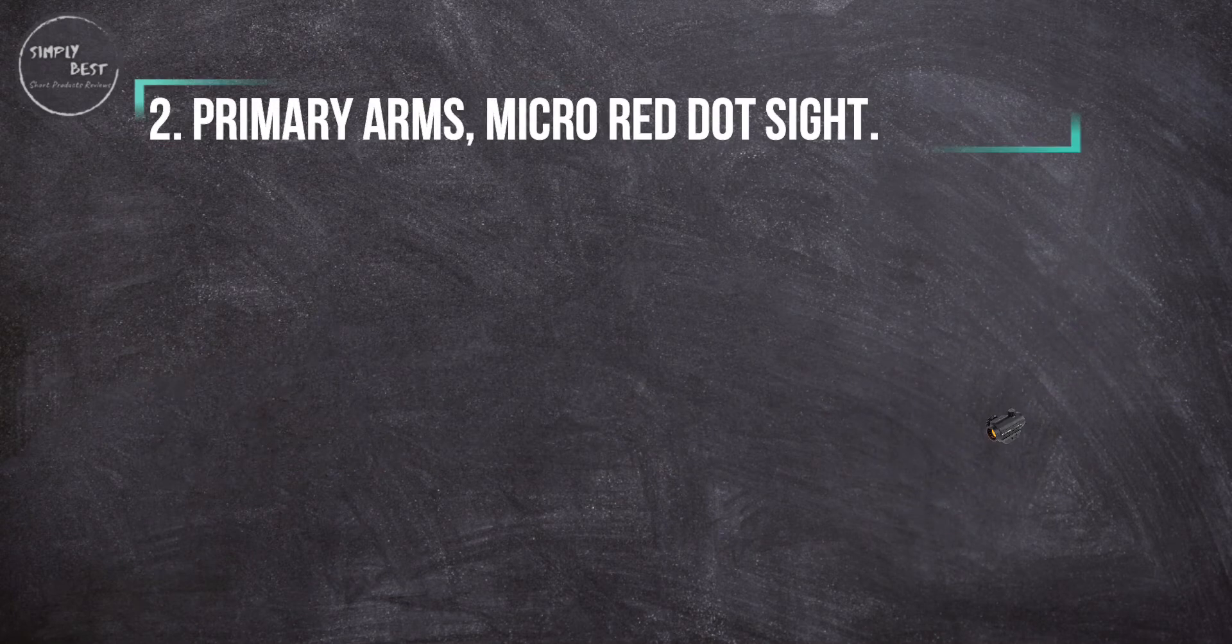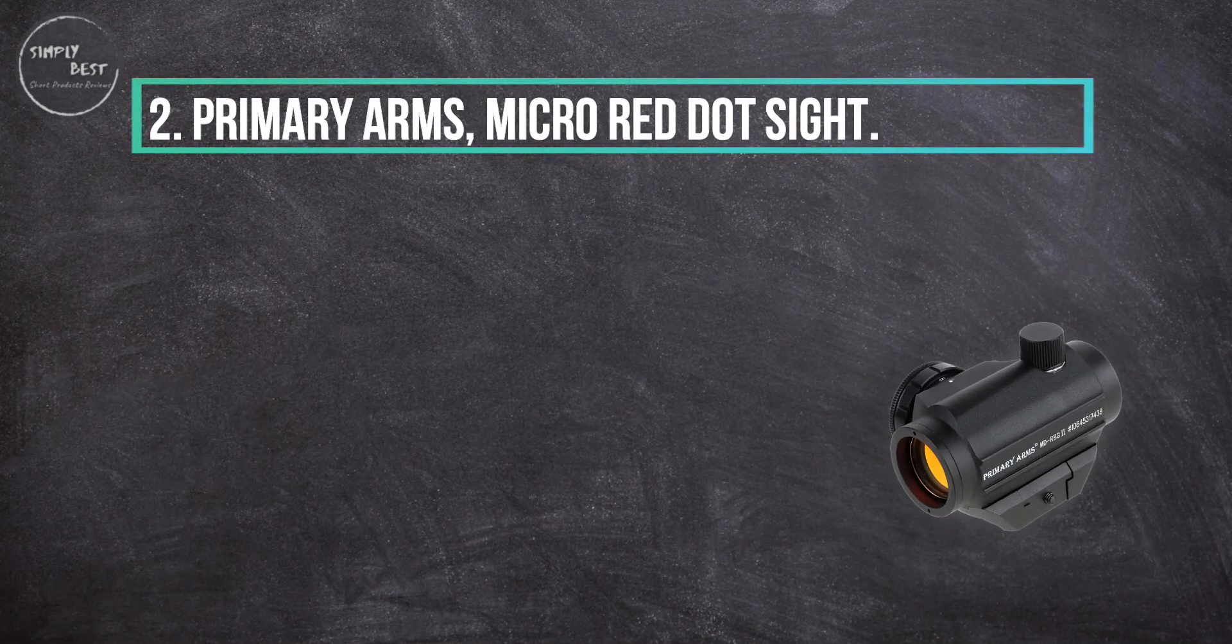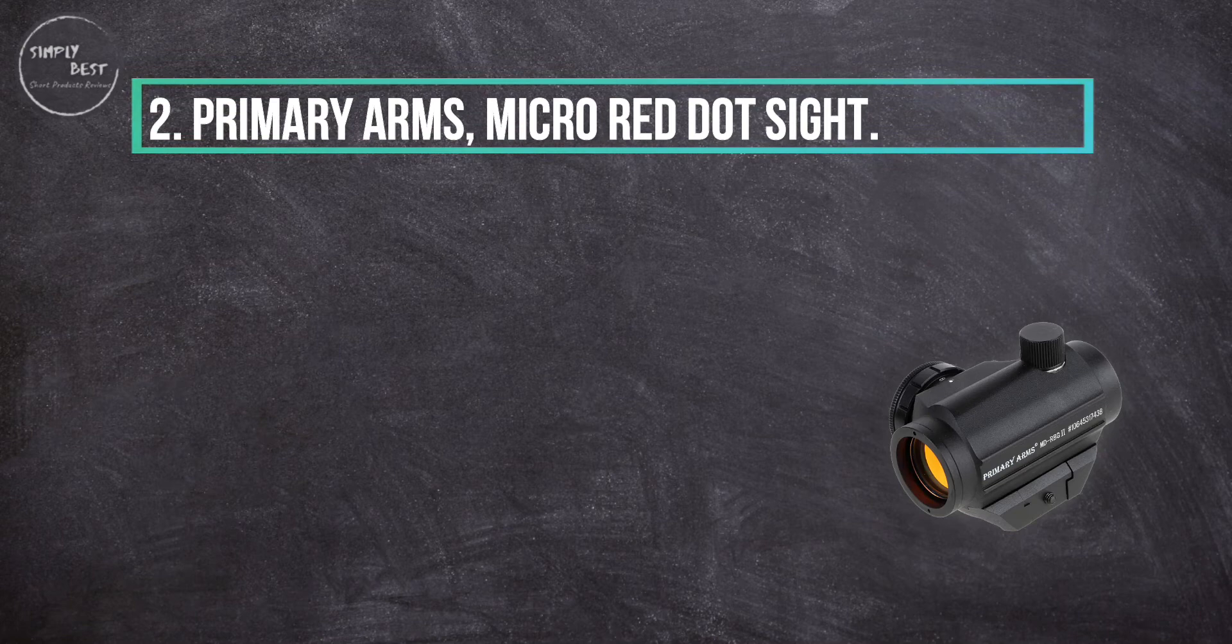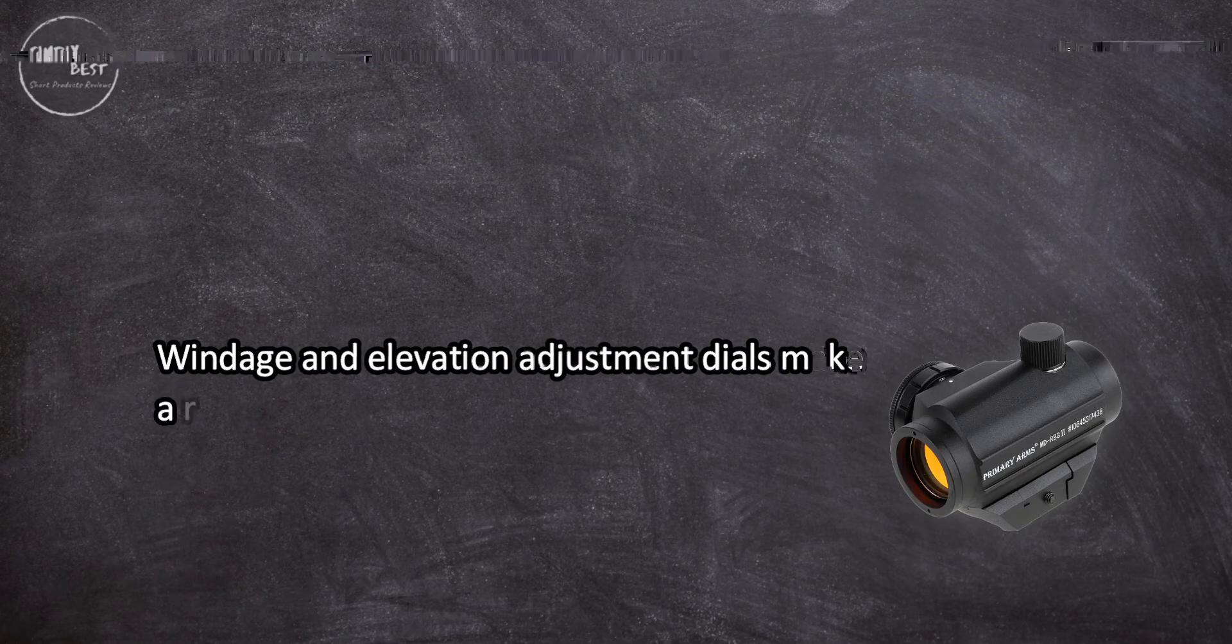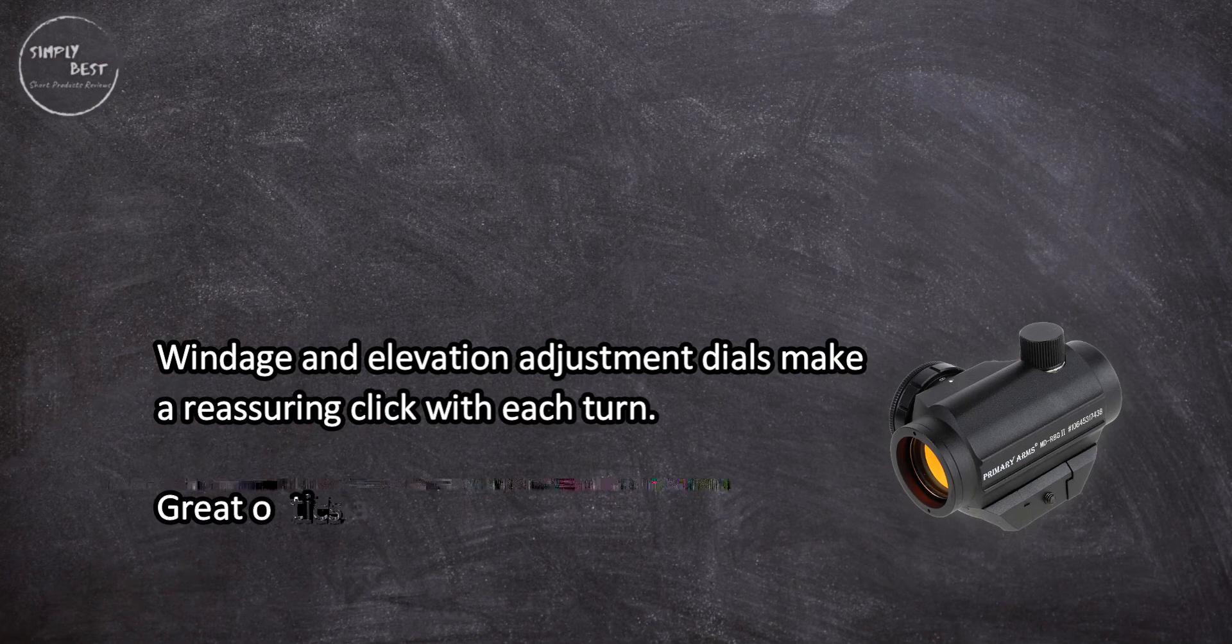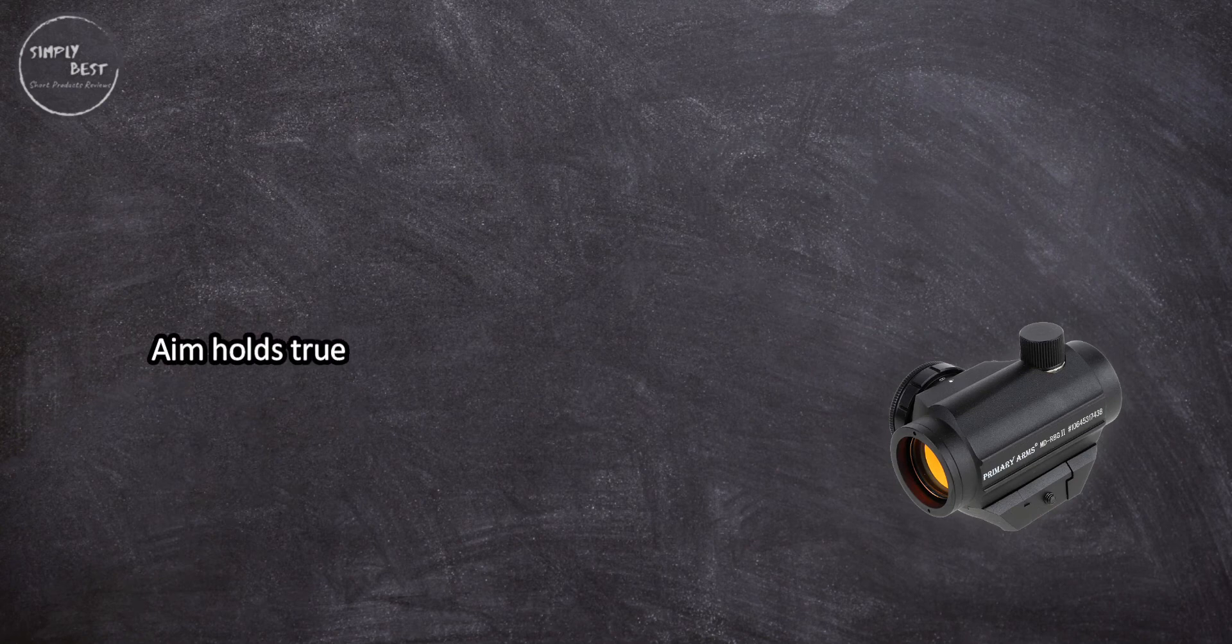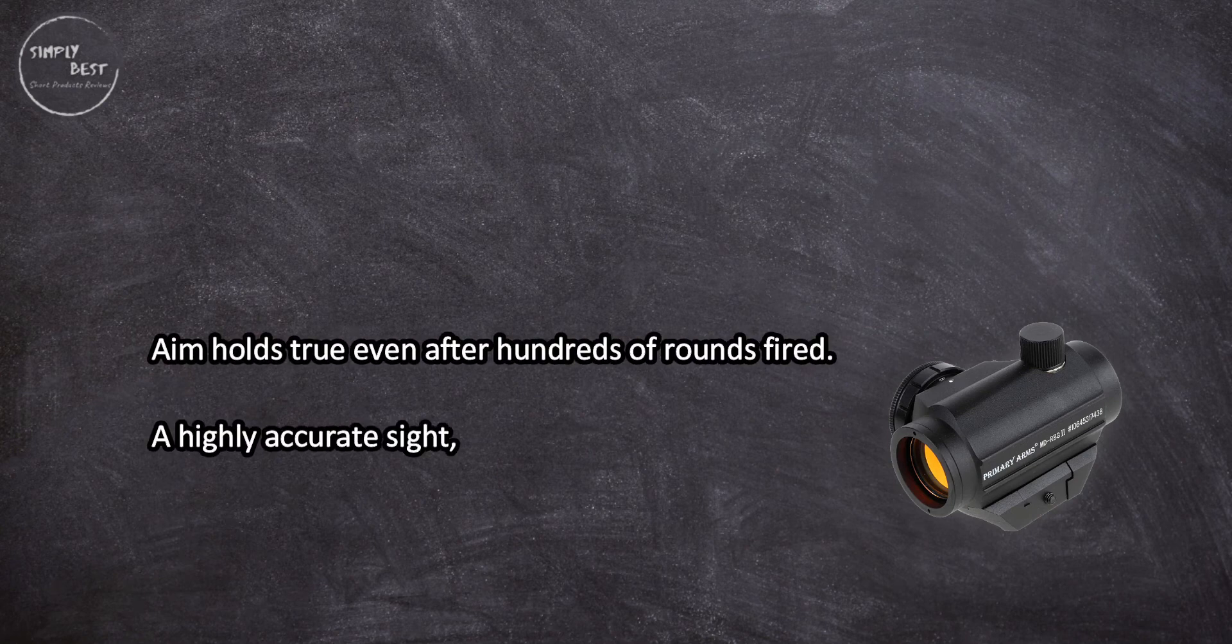At number two: Primary Arms Micro Red Dot Sight. Windage and elevation adjustment dials make a reassuring click with each turn. Great optics and accurate sighting. Aim holds true even after hundreds of rounds fired. A highly accurate sight, but its housing doesn't hold up well on high powered rifles.